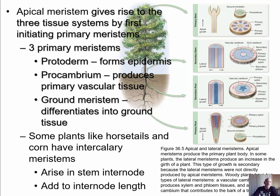When an apical meristem divides, one cell remains as a stem cell and the other goes down a path of differentiation — but that differentiating cell is not yet mature and still has more dividing to do. Those cells continue to divide and start going down different paths of differentiation to form different cell types of the general tissues. Since they're not fully functioning yet, we still call those meristems.